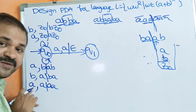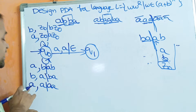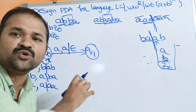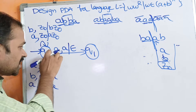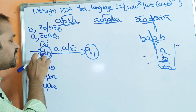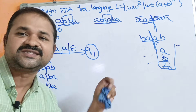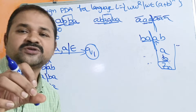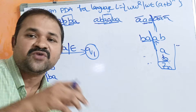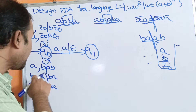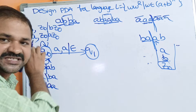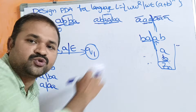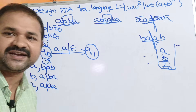This is non-deterministic PDA: on applying the same input symbol A on state Q0, we either stay at Q0 (push) or move to Q1 (pop). Likewise for input B with stack top B, we also have two choices: push and stay at Q0 if center has not come, or pop and move to Q1 if center has come.